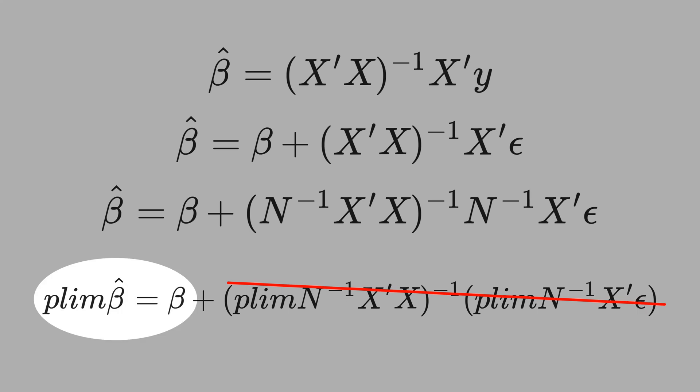For many estimators in econometrics, we get only unbiased beta for large sample, and not for small sample size.